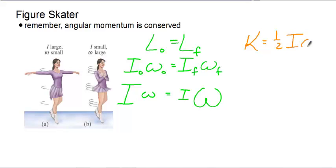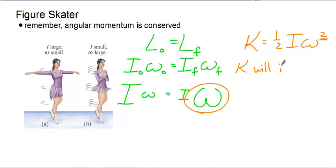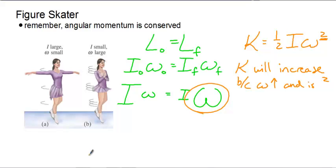If we think about the kinetic energy relationship, and she's spinning in place, she does have kinetic energy. In the formula ½Iω², we are squaring omega but not the rotational inertia. So when she pulls her arms in and increases omega, we're squaring that larger omega value. Her kinetic energy will increase after she pulls her arms in, because due to conservation of angular momentum, the internal force acts on the system. K increases because omega increases and is squared, while I is decreasing. For the figure skater problem, angular momentum is conserved, but kinetic energy increases.